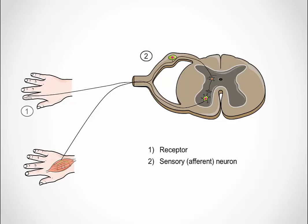Number two, the sensory or afferent neuron. The sensory or afferent neuron transmits the electrical response from the receptor to the central nervous system, thus the brain or spinal cord.